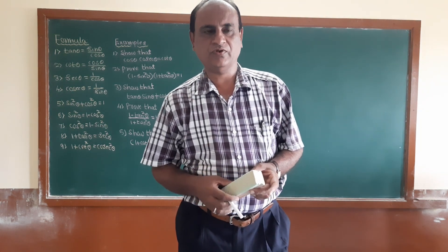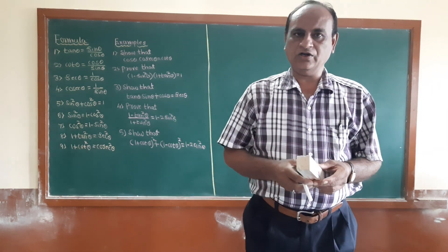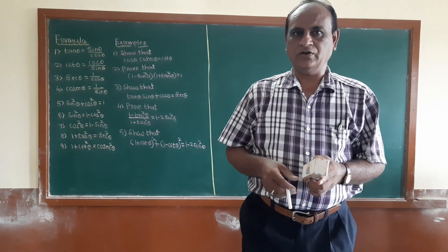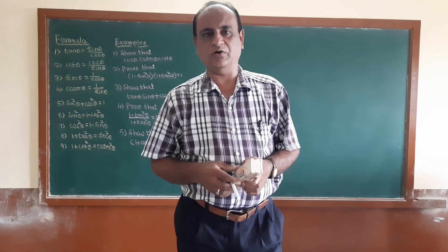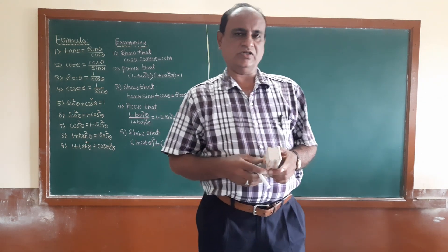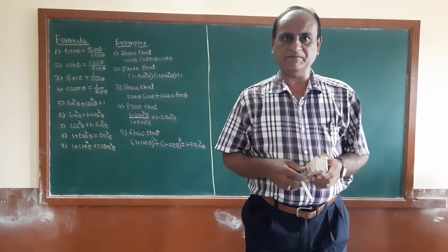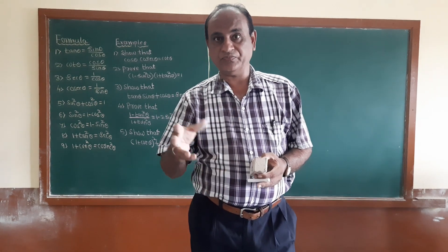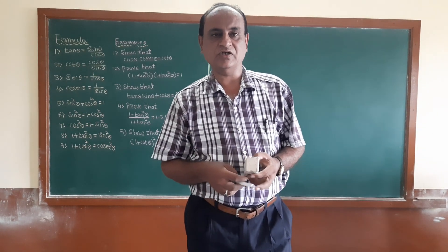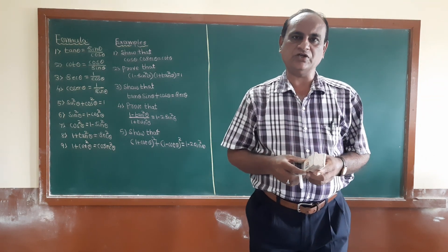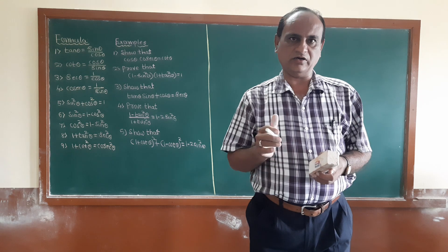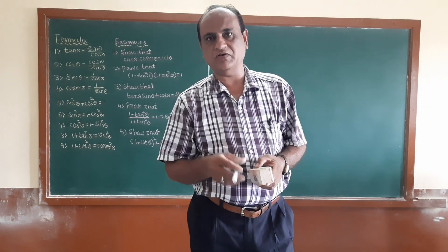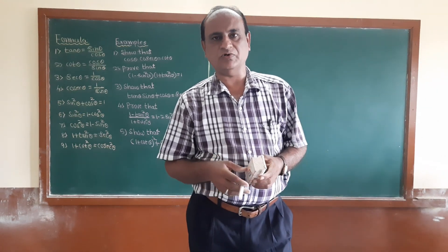In the last period, we covered trigonometry — the definition of trigonometry and the formulas. Sine theta is equal to opposite divided by hypotenuse. Cos theta is equal to adjacent side divided by hypotenuse. Tan theta means opposite side divided by adjacent side. Cot theta means reciprocal of tan theta. Sec theta means reciprocal of cos theta. Cosec theta means reciprocal of sine theta.